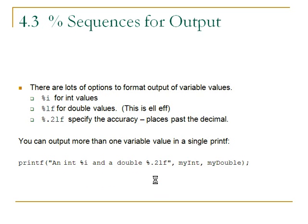We have percent sequences for output where we can specify something other than just the data type. For the tax rate example, it might be more appropriate to use %0.2lf, which means two places of accuracy past the decimal. You can also output more than one variable in a single printf, or different types. This example has a %i format specifier and a %0.2lf format specifier, corresponding to an int variable and a double variable.